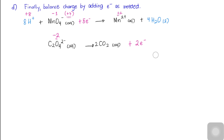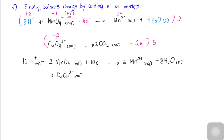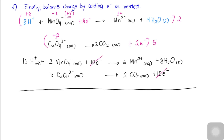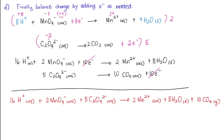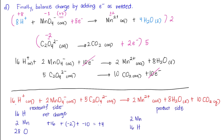Now, we multiply each half-reaction by an appropriate integer so that the number of electrons gained in one half-reaction equals the number lost in the other. We multiply the permanganate half-reaction by two and the oxalate half-reaction by five. After doing that, we can cancel the electrons to give us the balanced redox equation, which is the sum of the balanced half-reactions. We can check the balanced equation by counting atoms and charges: there are 16 hydrogen, 2 manganese, 28 oxygen, 10 carbon, and a net charge of 4+ on each side, confirming that the equation is correctly balanced.